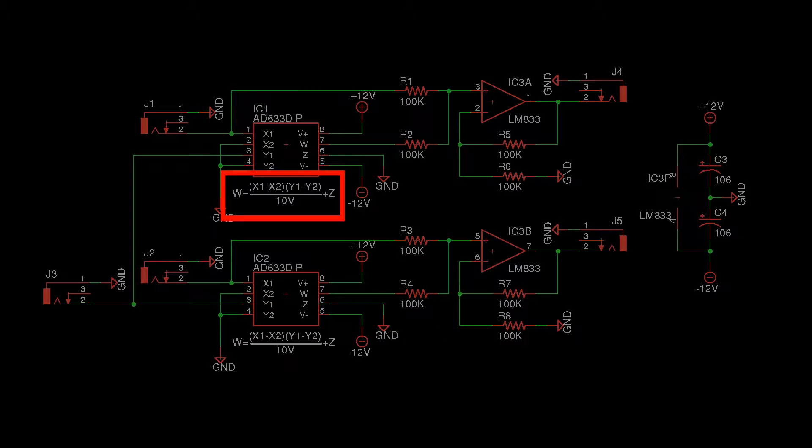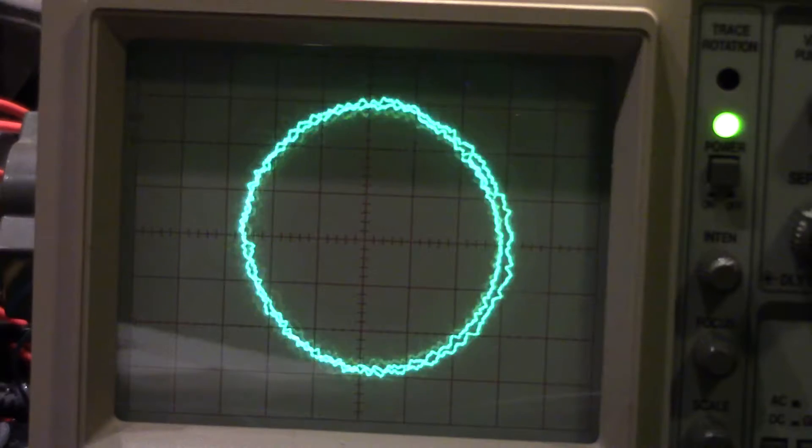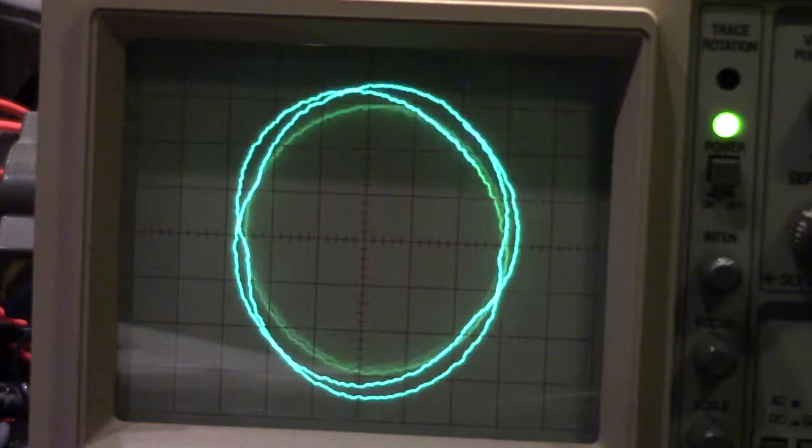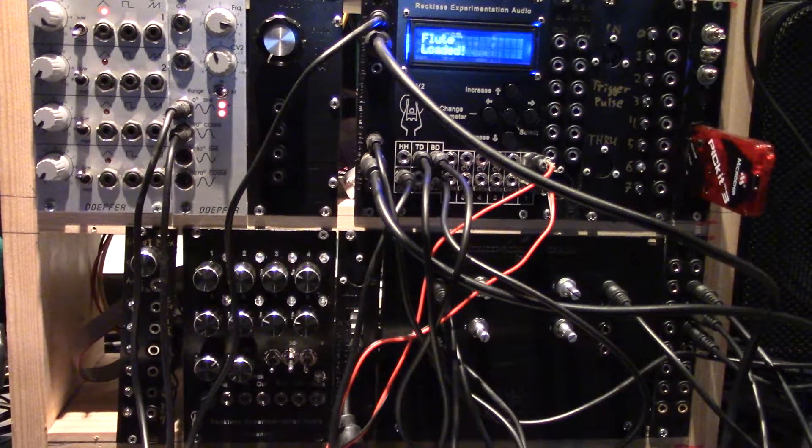One thing to note is the transfer function of the AD633. The two signals multiplied together are divided by 10. This division keeps the sound signal small compared to the circle it's drawn on. Now let's see the circuit in action.